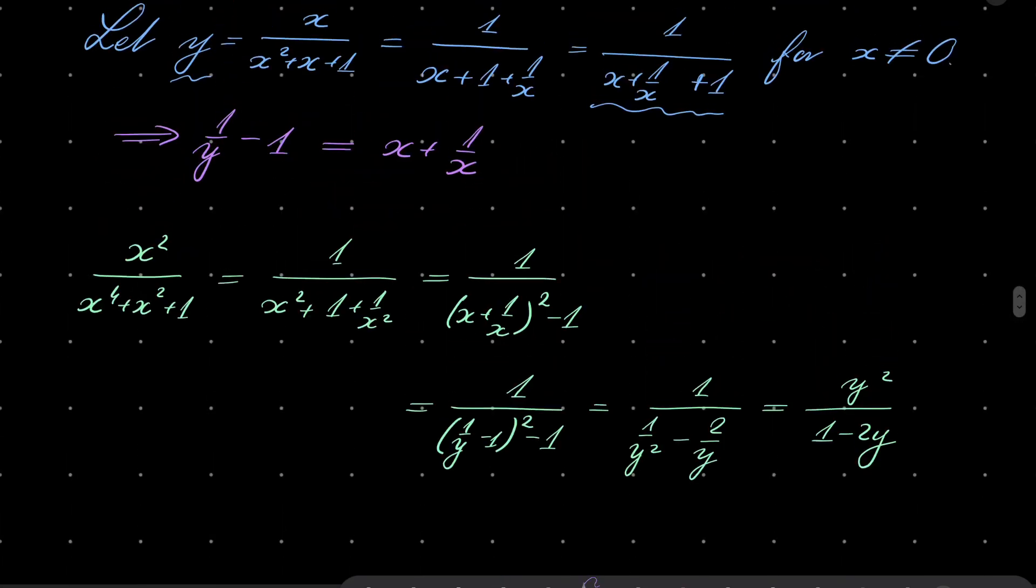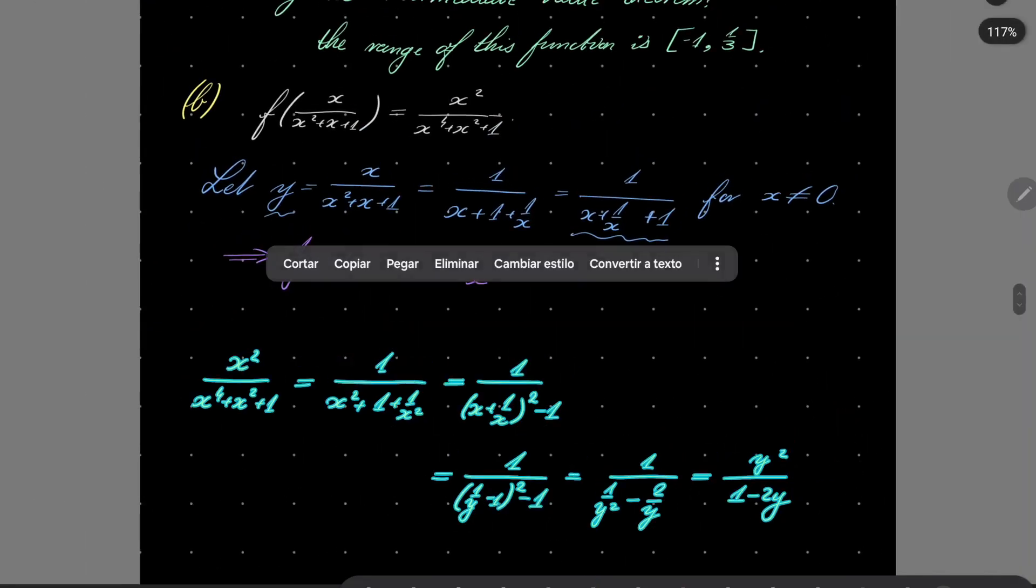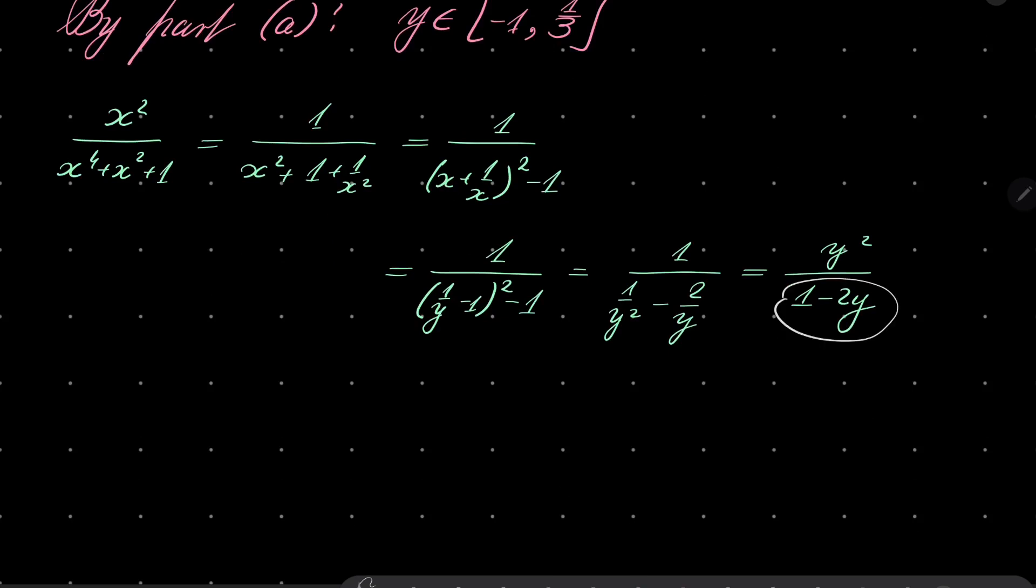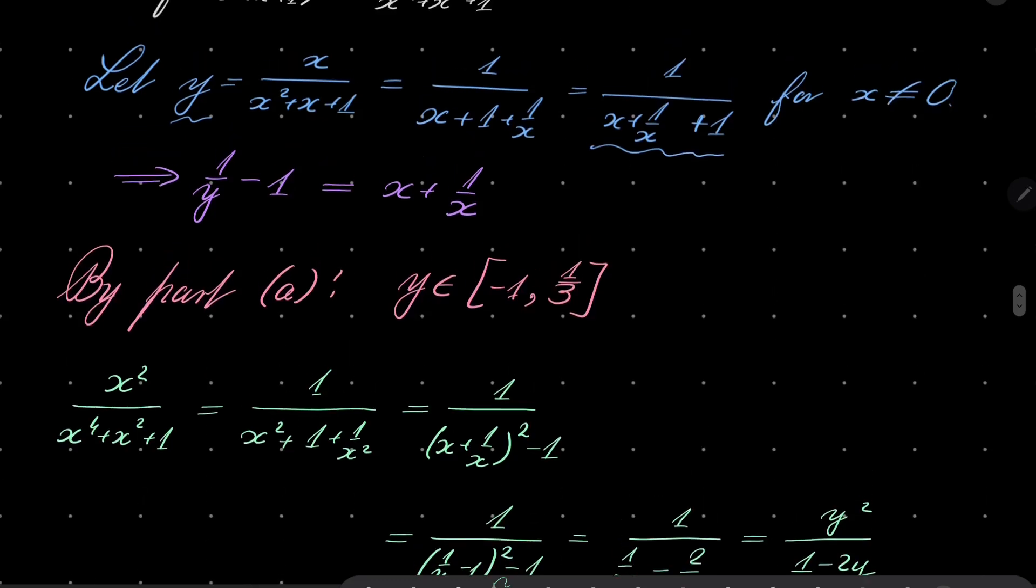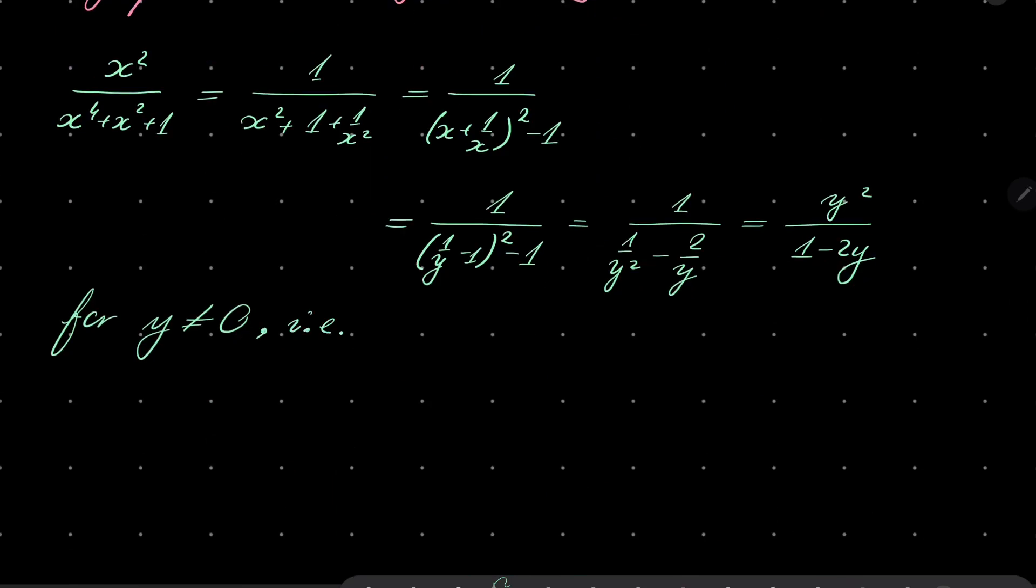Remember that by part A, let's write it right here, we know that our number y is any number in the interval minus 1, 1 third. So there is no problem because problem can happen when y equals 1 or 1 over 2, but 1 over 2 is not in this interval so there is no problem. Also the problem may be when y equals 0, or y which is not 0. But when is y equal to 0? Well y equals 0 if and only if x equals 0, so when x is not 0...